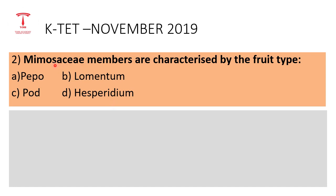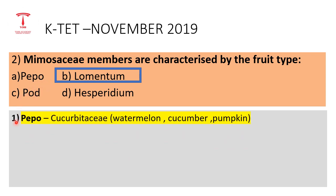Looking at the options by plant family: Pepper — in the Cucurbitaceae family, the fruit type is called a pepo. Watermelon, cucumber, and pumpkin all belong to Cucurbitaceae. The correct answer relates to the characteristic fruit type for these families.